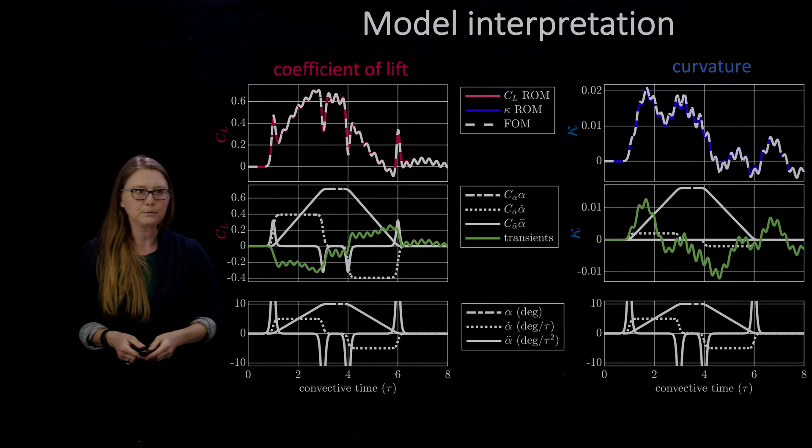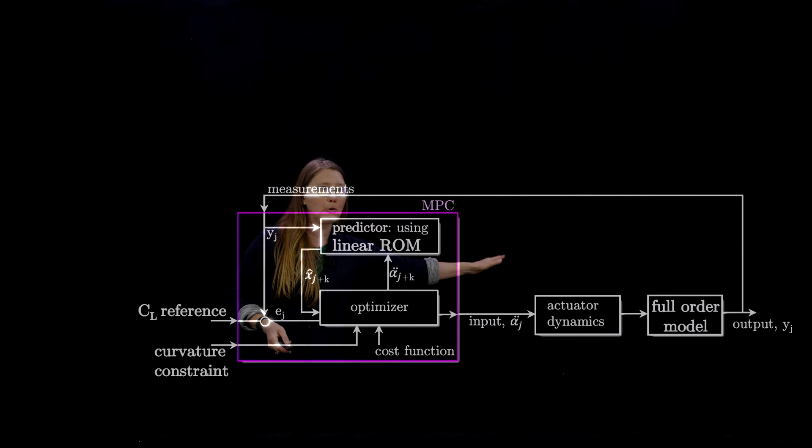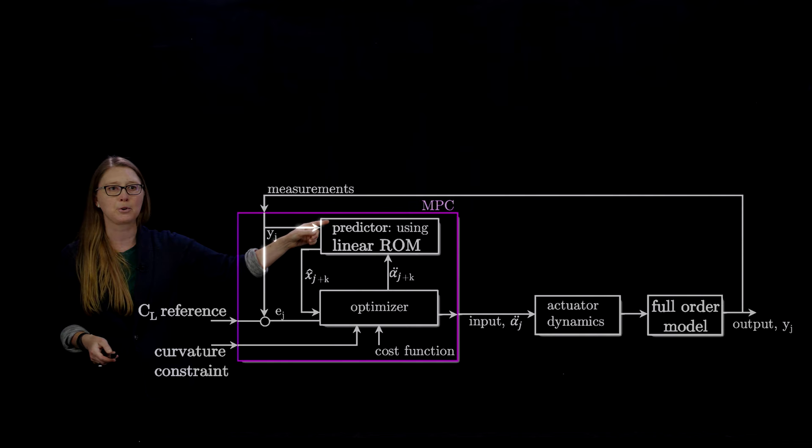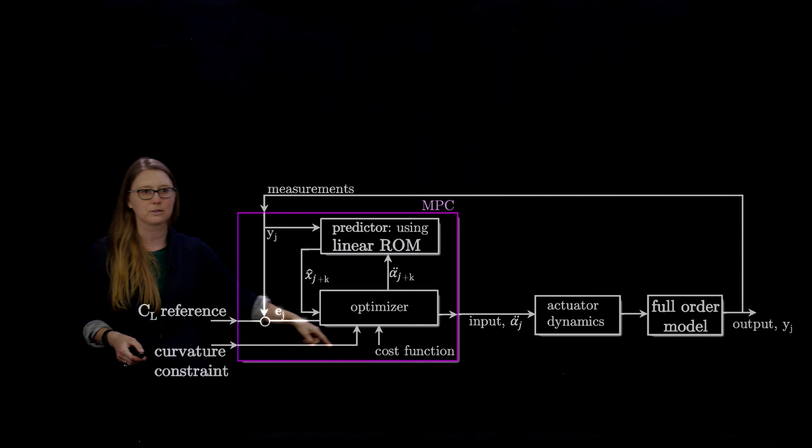So, let's see how we can use this. I'm going to give you some control examples. This is just kind of our basic control architecture. We're going to be running a full order model. So, this is our full order system, all of the nonlinearities. But we're going to do all of the prediction for the feedback using our linear rank 9 model. So, our linear state space low rank model. We're using model predictive control. That's what's in this purple box. Because we wanted to be able to use constraints on curvature. So, it wouldn't bend too far.